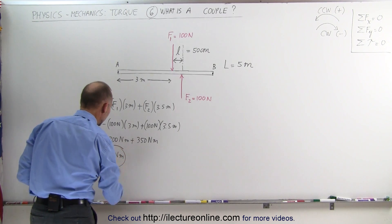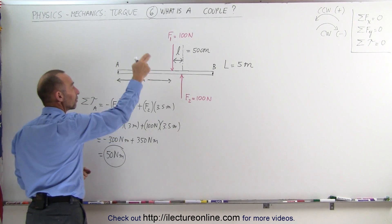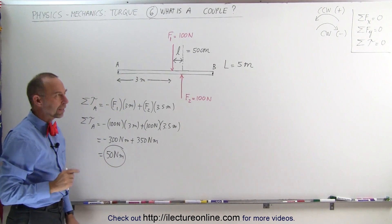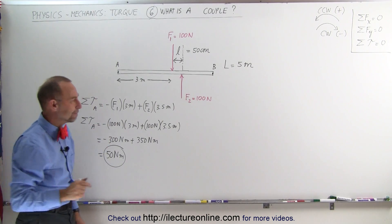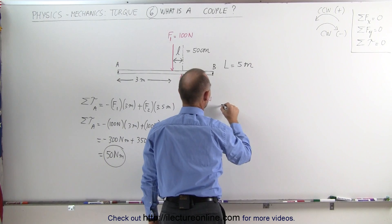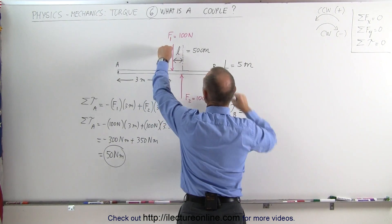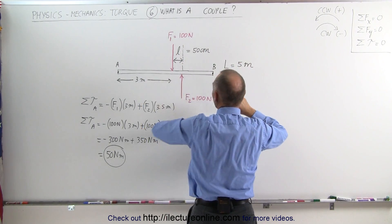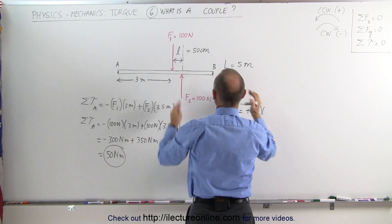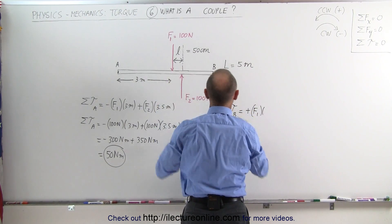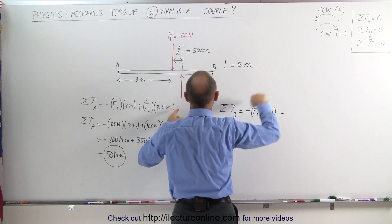Which is equal to 50 Newton meters. So relative to point A, the left side of the beam, the sum of the torque caused by those two forces equals 50 Newton meters. Now let's calculate the torque caused by those two forces relative to point B. The sum of all the torques about point B: F1 causes a counterclockwise motion about B, that would be a positive torque — plus F1 multiplied times the distance, in this case 2 meters.